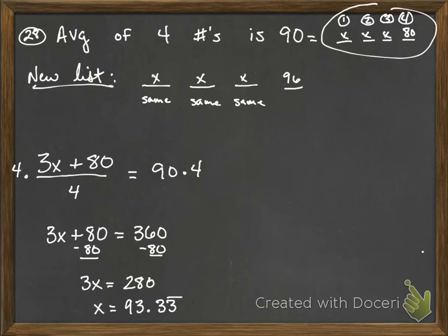Now we're asked to figure out what the average of this new list of numbers is. So we have 93.33 plus 93.33 plus another 93.33 plus the last number is 96. When we add all of these up, we get 376.